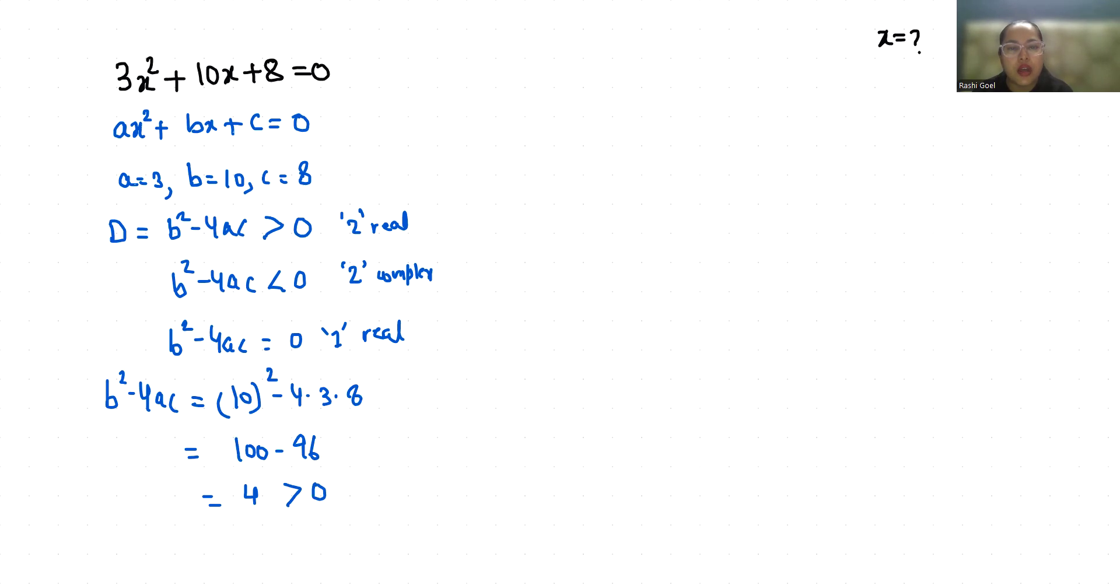So let's find out the solution. 3x² + 10x + 8 = 0. I am going to use the quadratic formula: x = (-b ± √(b² - 4ac)) / 2a.